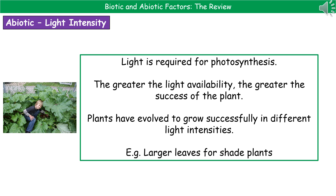Now let's look at these abiotic factors in turn and see how they actually impact ecosystems. The first one is light intensity. Light is required for photosynthesis, and logically, the greater the amount of light available, the greater the success of the plant, because it can carry out photosynthesis at a faster rate. However, plants have also evolved to grow in shady areas, and those plants tend to have much larger leaf surface areas to trap the maximum amount of light available.